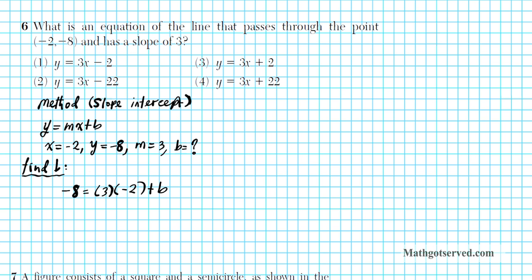I simply plugged in y, x, and m into the y equals mx plus b equation. Let's solve this algebraic equation for b. We can simplify: 3 times negative 2 is negative 6, so negative 8 equals negative 6 plus b. To get b isolated, we add 6 to both sides. So b is going to be negative 8 plus 6, which is negative 2. That's your y-intercept, and we can clearly see that option 1 is our answer.